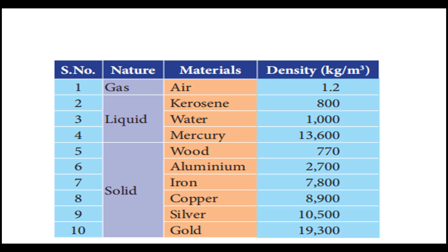Look at the density of water — it is 1000 kilogram per meter cube. For iron, it is 7800 kilogram per meter cube. Solid materials possess higher density compared to that of liquid, and liquid possesses higher density compared to that of gas.